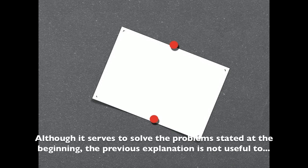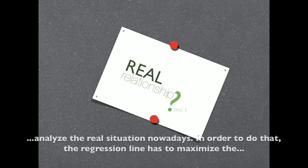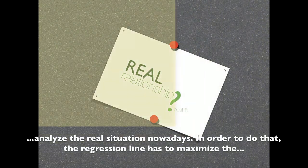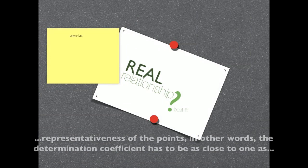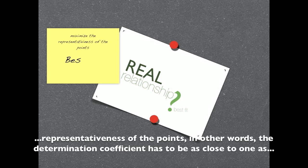Although it serves to solve the problems stated at the beginning, the previous explanation is not useful to analyze the real situation nowadays. In order to do that, the regression line has to maximize the representativeness of the points. In other words, the determination coefficient has to be as close to 1 as possible.